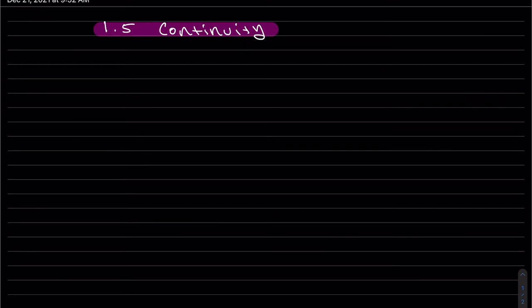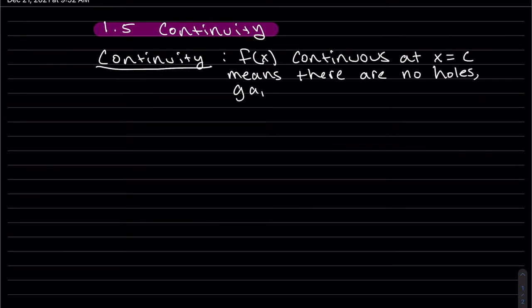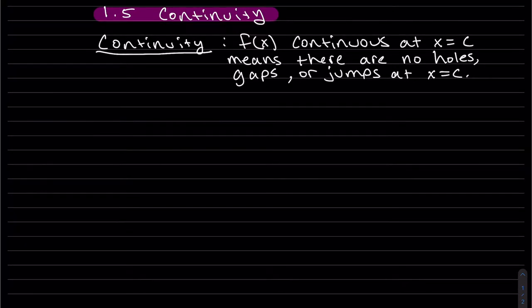This is about continuity. For a function to be continuous at a point at x equals c, that means there are no holes, no gaps, or no jumps at x equals c. Basically, if you're graphing it, you have to be able to cross c without lifting your pen or pencil. That's what it means to be continuous at a point.